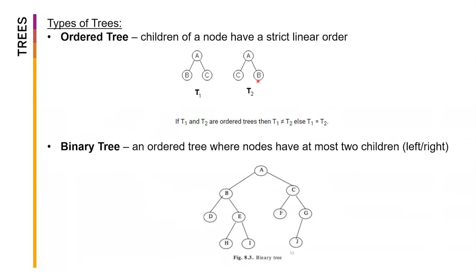We also have binary trees, which are ordered trees where nodes have at most two children — left and right. An example: A has B as the left child and C as the right. B has D to the left and E to the right. G here has only one child, J, as its left child. This is an example of a binary tree — at most two child nodes per parent.